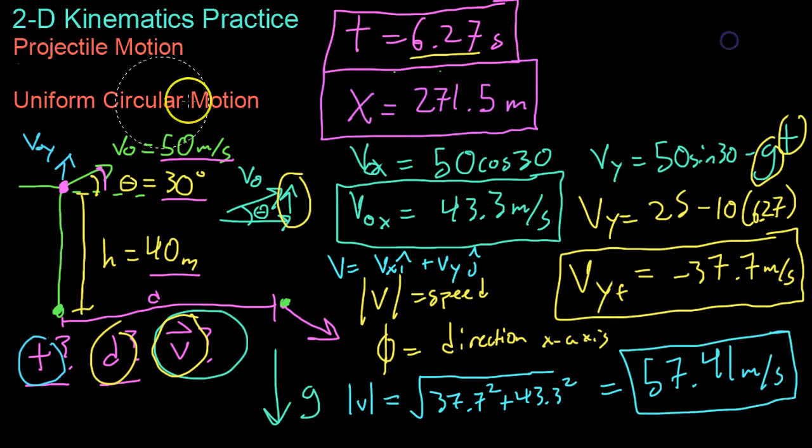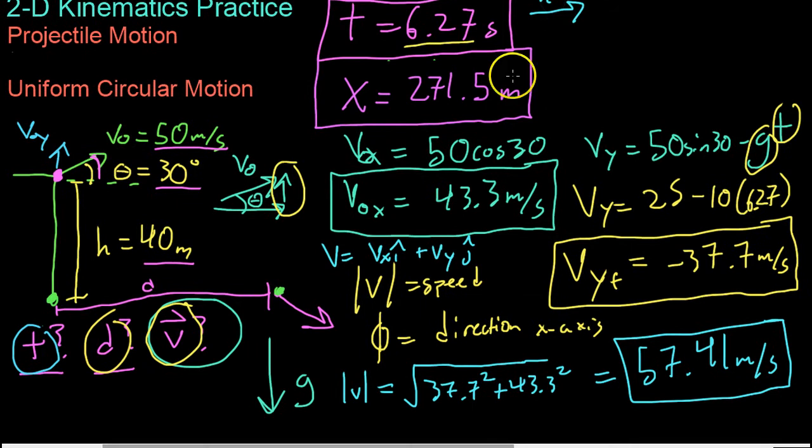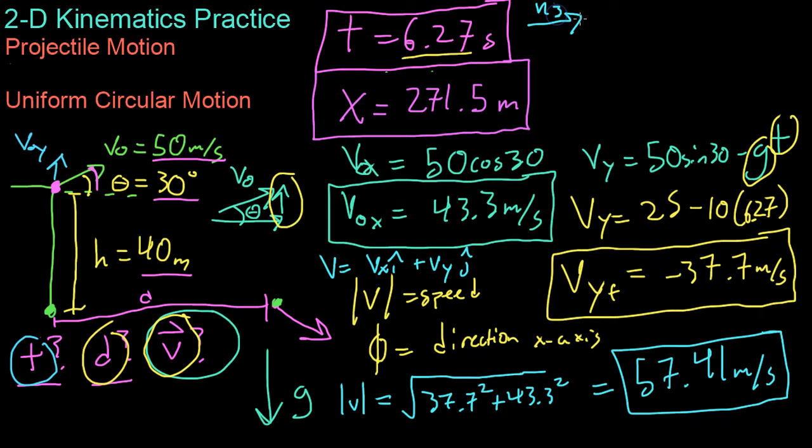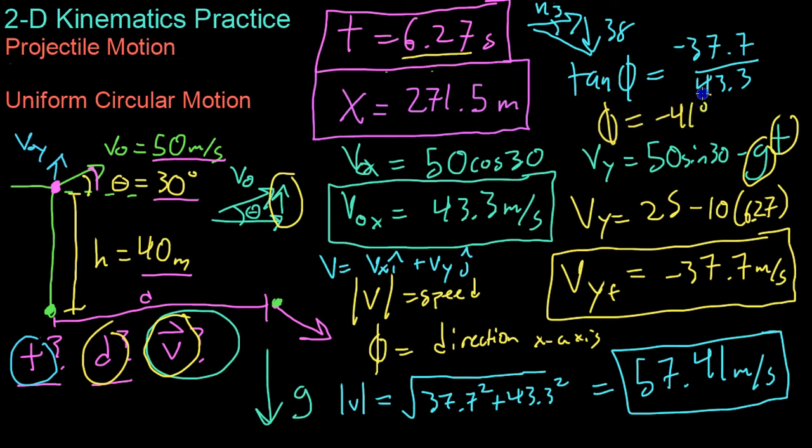And then, using trig, you can find the direction based on, you get 43 in the x direction and about 38 in the y direction. So, you can solve for this angle using trig, and what you'll find is that the tangent of that angle, phi, is y over x, or negative 37.7 over 43.3, or phi equals negative 41 degrees.